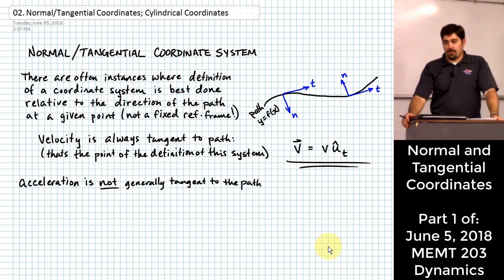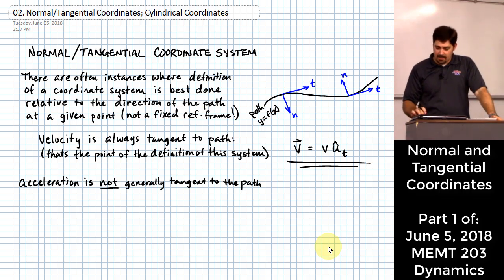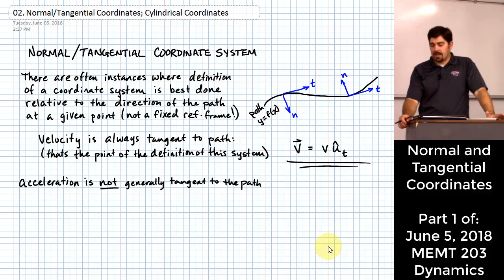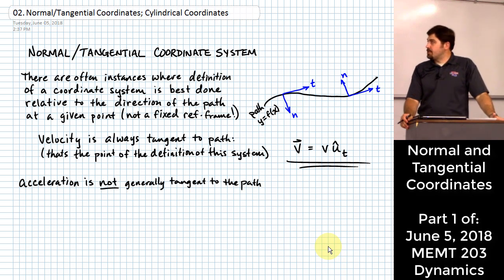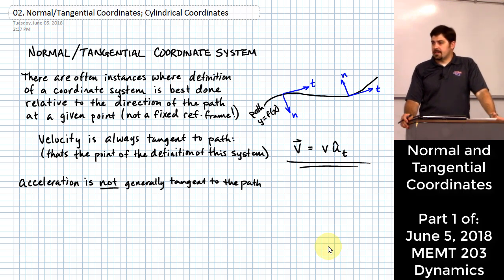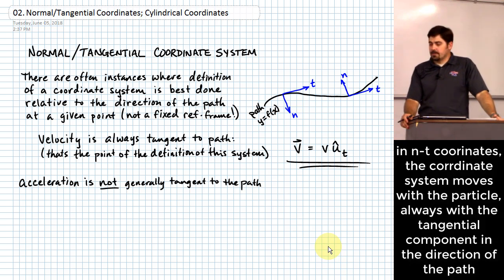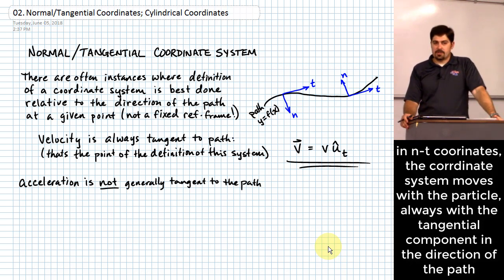Today we're going to get going on a set of topics that have to do with coordinate systems different than just an XY coordinate system, and we're going to start with one called a normal and tangential coordinate system. The big deal with a normal tangential coordinate system is that the coordinate system basically travels with the direction of motion.